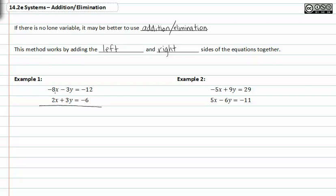So let's do that. We're going to add the like terms together and see what happens. Negative eight x plus two x gives me negative six x. Negative three y plus three y gives me zero, so I won't write anything there. Negative twelve plus negative six gives me negative eighteen. If I divide both sides by negative six, I get x equals three.